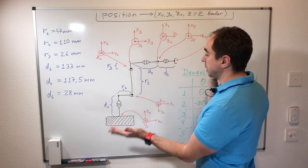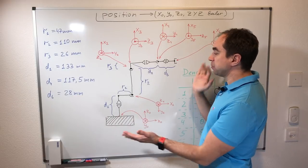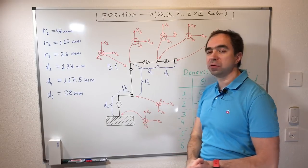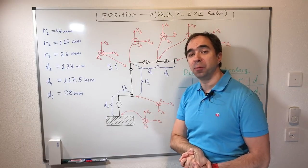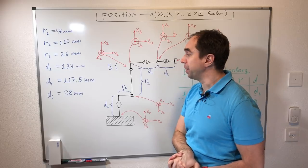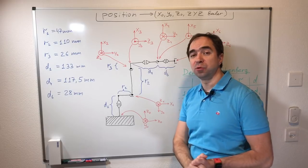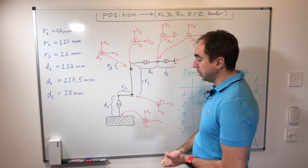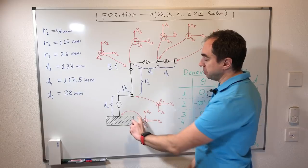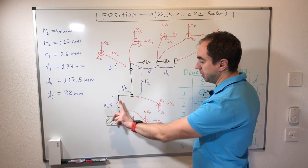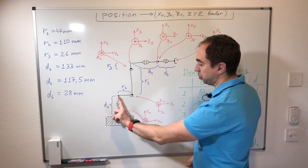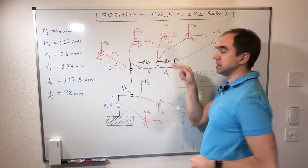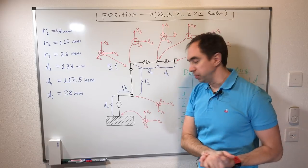Here I have the kinematic diagram of this robot. I already showed this kinematic diagram some videos ago, but I think it's a good idea to remind it here. Here I have the base. This is the first joint, the second, third, fourth, fifth, and sixth joint.